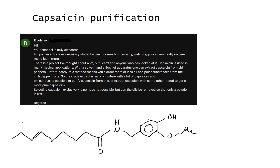He is asking for ways to obtain pure capsaicin from an extract of chili peppers. Since this would be a very nice example for a separation problem in organic chemistry, we are going to make a video about it. In the first part, let me explain the general thought process when addressing any kind of separation problem in organic chemistry. In the next part, we are going to look at the more general approach of separating compounds based on their properties.